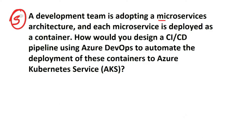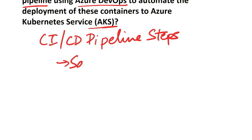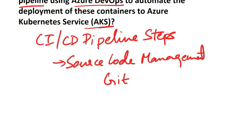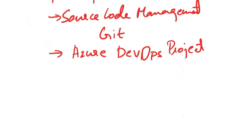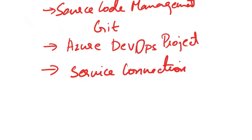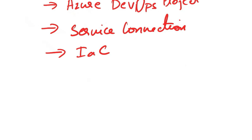Next question: a development team is adopting a microservices architecture and each microservice is deployed as a container. How would you design a CI/CD pipeline using Azure DevOps to automate the deployment of these containers to Azure Kubernetes Service (AKS)? Here is a general outline. First, use a version control system like Git to manage your microservices source code. Create an Azure DevOps project and link it to your Git repository. Create a service connection in Azure DevOps to securely connect to your AKS cluster. For infrastructure as code (IaC), use tools like Helm or Kubernetes manifests to define the AKS cluster infrastructure as code, and store the IaC scripts in the version control system.